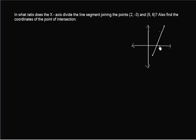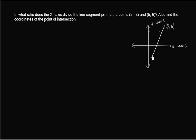So here is a rough diagram. We all know that this vertical line is called the y-axis and the horizontal line is called the x-axis. Here this is the point 5 comma 6, which is given, and this is the point 2 comma minus 3.